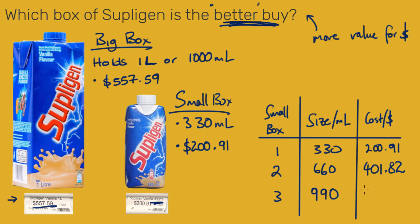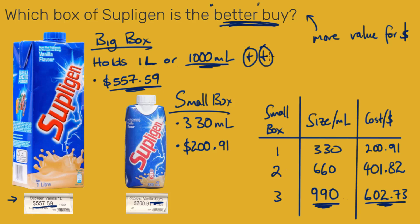Three boxes will hold 990 milliliters and will cost 602 dollars and 73 cents — you can check that on your calculator. It's not exactly a thousand milliliters like the big box, but look: for the big box, 1000 milliliters costs 557 dollars, while three small boxes cost 602 dollars and 73 cents for only 990 milliliters. So the big box is the better buy — you get more milliliters for less money.